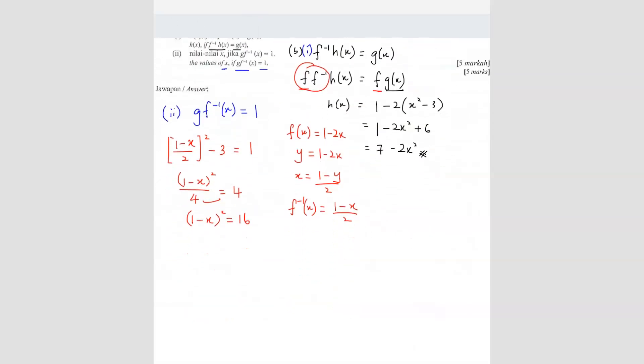I'm going to bring the square over. Become square root. So 1 - x = √16. You've got two answers, plus minus. 1 - x = +4, and 1 - x = -4. So x = 1 - 4 will be -3. Here will be x = 5. You've got two answers: -3 and 5.